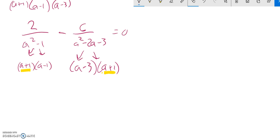So I'm going to multiply each thing in here by that. So let me rewrite what I have so far. 2 over a plus 1 times a minus 1 minus 6 over a minus 3 times a plus 1 equals 0.